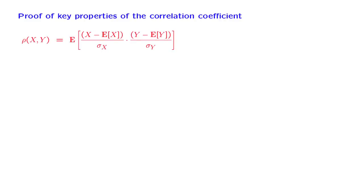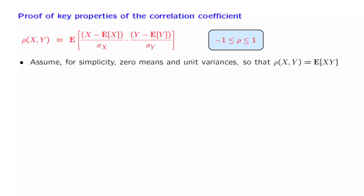In this segment, we justify some of the properties of the correlation coefficient that we claimed a little earlier. The most important property is that the correlation coefficient lies between minus 1 and plus 1. We will prove this property for the special case where we have random variables with zero means and unit variances.